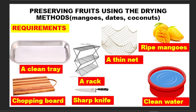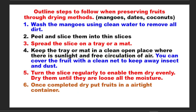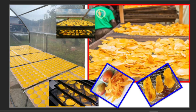Now let's look at fruits. We require the same materials, apart from a ripe mango. We are talking about mango — if you don't have mango, you can dry dates or coconut. Make sure you peel the mango, then slice the mango, spread the slices on a tray or a mat, make sure they are very clean, and cover using a clean net. This is the mango that has already been dried — you can see how they look like. We have come to the end of our lesson. Thank you for watching. Thank you for listening.